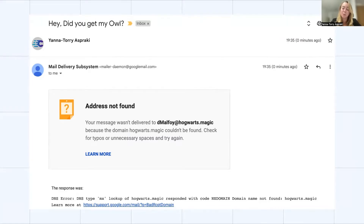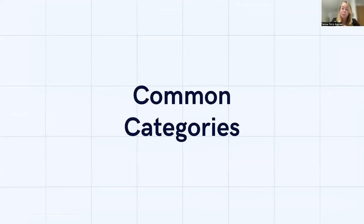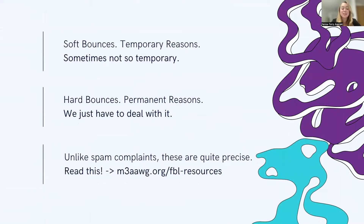ESPs will decide what to do — unsubscribe, put the email on a suppression list, or let you know there's an issue with your list. The most common categories are soft bounces and hard bounces. Soft bounces are temporary reasons an email wasn't able to land in the inbox — though some temporary reasons are not always that temporary. For example, a Videotron email address has a 2GB limit, and two gigabytes isn't enough for all the emails we receive daily. So even though a full mailbox is technically temporary, the human factor makes it not so temporary.